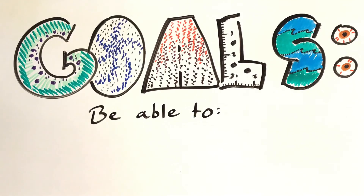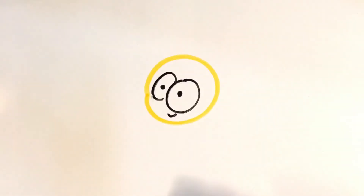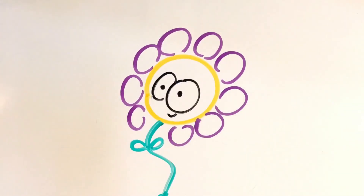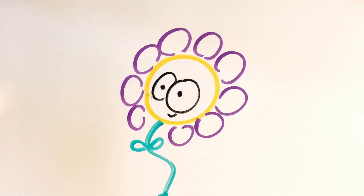At this point, let's review our goal. After watching this video, you should be able to explain what happens to the mass of a plant's tissues as it grows. If you can't do that, go back and watch the parts of the video that you didn't understand. But remember that science is not just about answers — it's also about questions. Pause the video once more and come up with a few questions of your own. What questions can you come up with to extend our investigation?